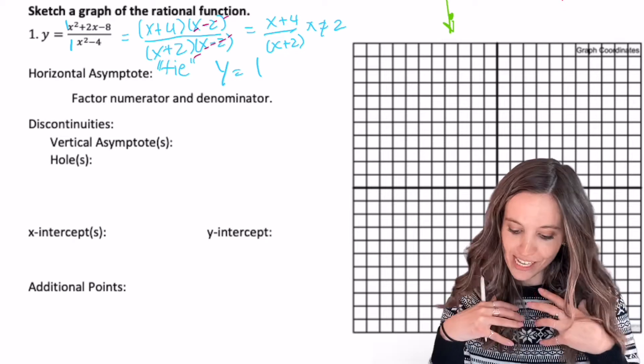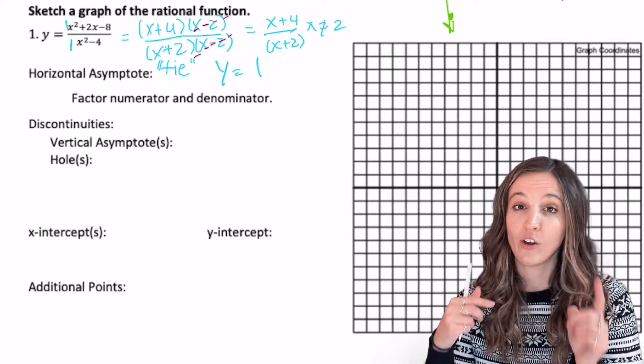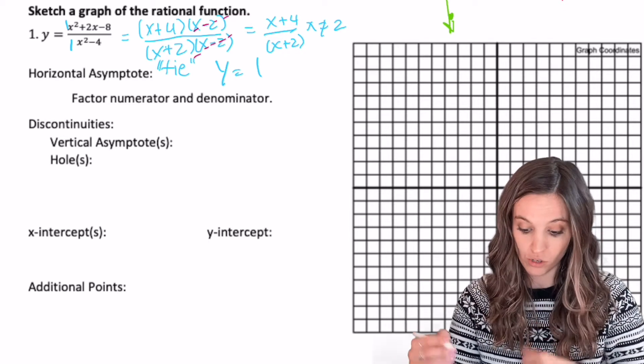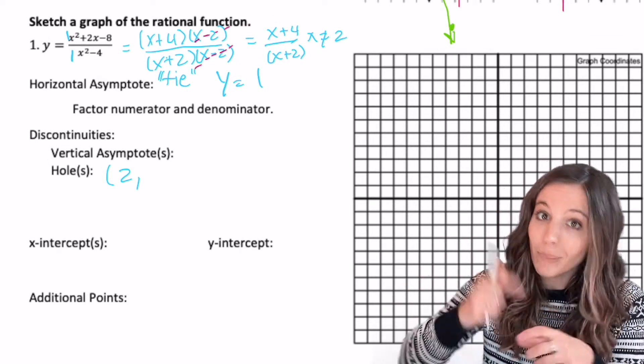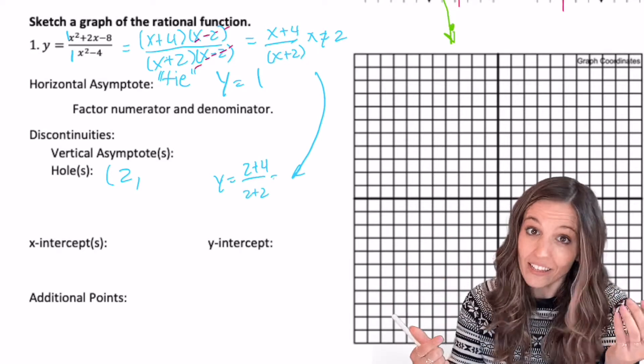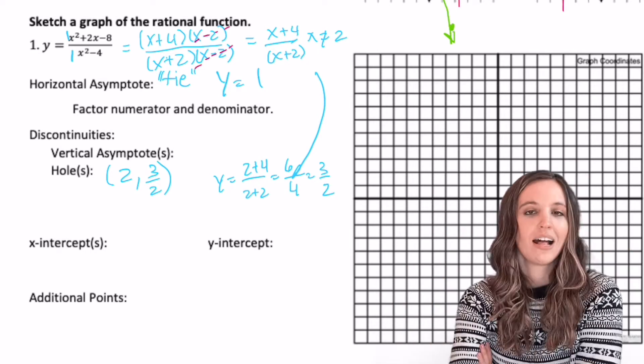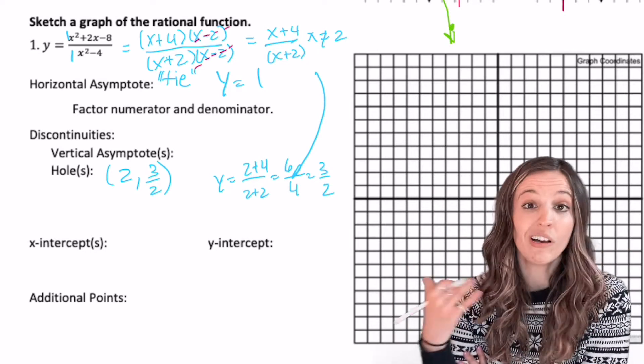Do you see what I see? I was able to remove that x minus two, so I know I'm going to have a hole at x equals two. Well, I'm going to need the y-coordinate for that hole. How do I find it? Plug x equals two back into my simplified function. Looks like my hole is at two, three halves.